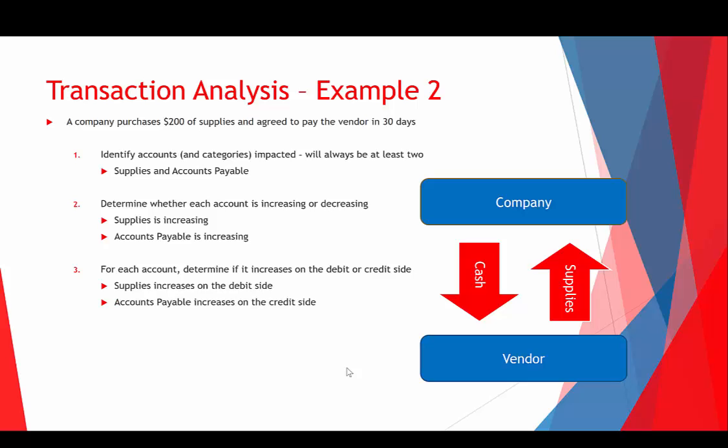Now that we know everything, we record our journal entry: supplies for $200 on the left, accounts payable for $200 a little lower and on the right. And lastly, double-check: debits do equal total credits. We've made our second journal entry.